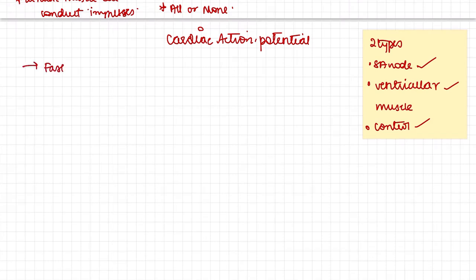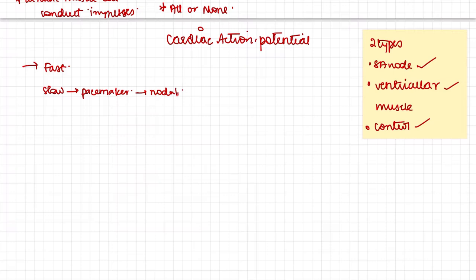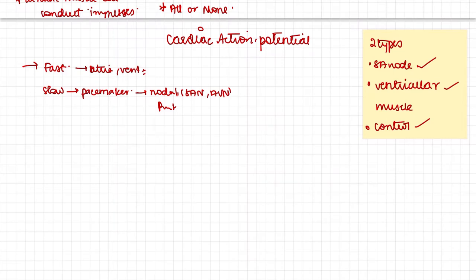Cardiac action potentials are of two types: the fast type and the slow type. The slow type is also called the pacemaker potential because it is present in the pacemaker cells, which are the nodal cells like the SA node, AV node, and Purkinje fibers. The fast type cells are present in the conducting and contracting cells of the heart, like the muscles of the atria and ventricle.